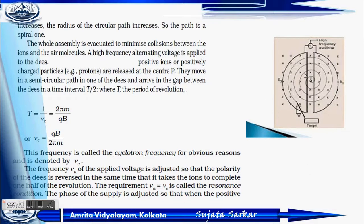The path is a spiral one. A high frequency alternating voltage is applied to the Dees, and positively charged particles released at centre P move in a semicircular path in one Dee and arrive at the gap. The time interval is T/2, the half period of revolution. T = 1/νc = 2πm/QB. The cyclotron frequency is νc = QB/2πm.